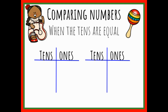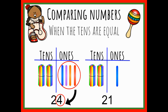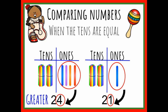Now let's talk about if the tens are equal. On the left, I have two groups of 10 and four ones, and on the right, I have two groups of 10 and one one. I'm going to first look at the tens, and I'm going to notice that they're equal. Therefore, I'm going to look over at the ones. In the number 24, I have four ones. In the number 21, I only have one one. That helps me know that if the tens are equal, I look at the ones — four is greater than one. Therefore, 24 is greater, and 21 is less than 24.